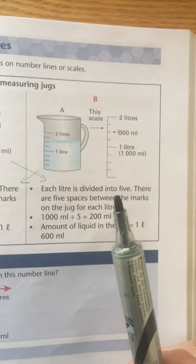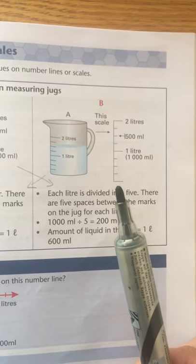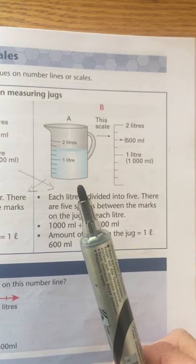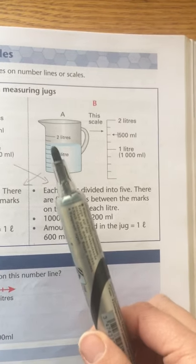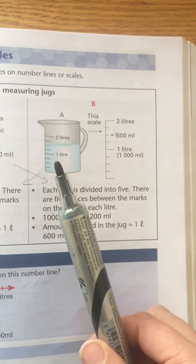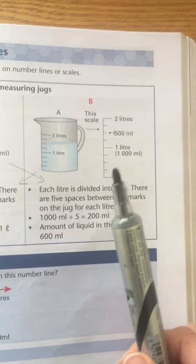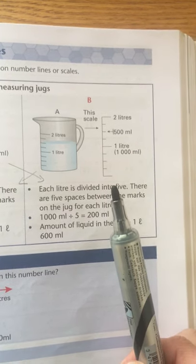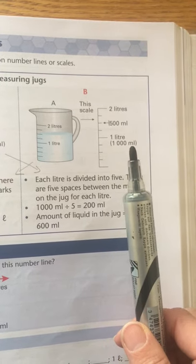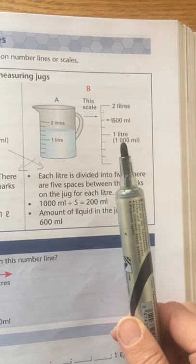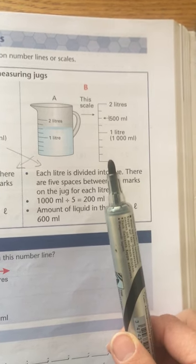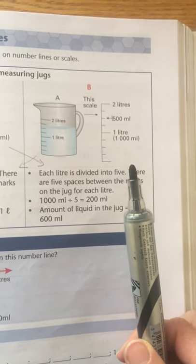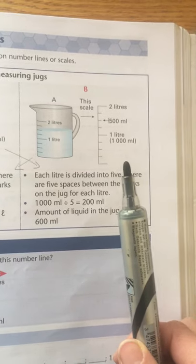The same with number B over here, it's the same type, it looks the same because it's also lines like that and it's also one liter and two liters but there are four spaces in between instead of five. So if we take a thousand milliliters and we divide it by four because there's four spaces then we get 250 milliliters.